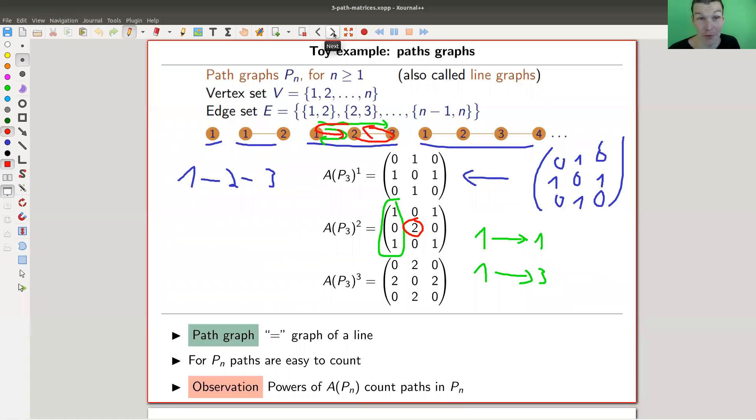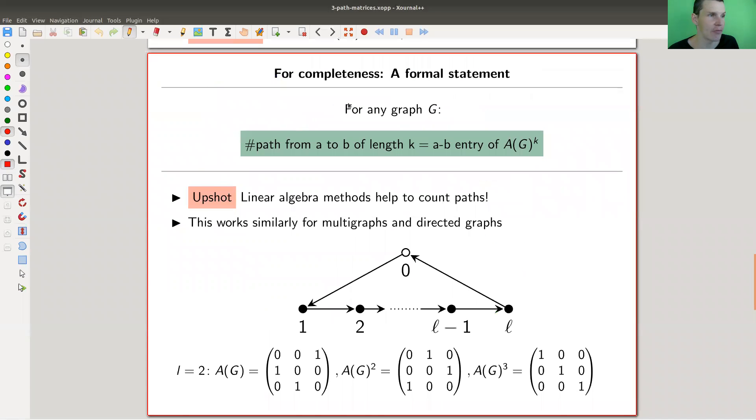Turns out that this toy example is a prototypical example. For any graph, the paths from a to b of length k are just the a-b entry of A to the k. It's an amazing result because essentially it's completely algebraic. You just need to compute the matrix power and you're done, instead of doing some combinatorial mental yoga in your head. It's really, really simple. It's absolutely beautiful. Paths from a to b of length k are the ab entry of A to the k. Linear algebra counts paths.